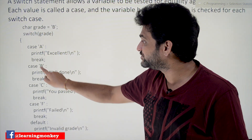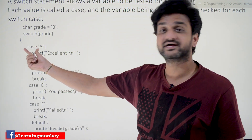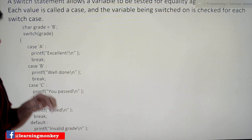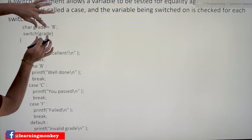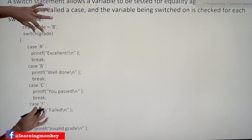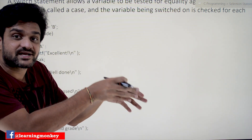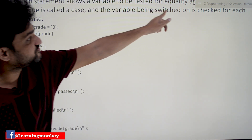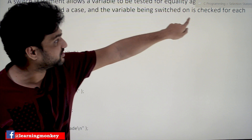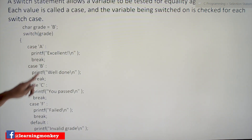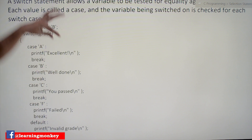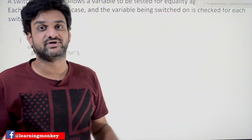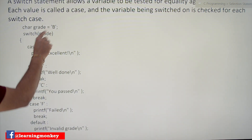Each value in the list is called a case, and 'case' is another keyword which describes the values in the list. The value of the variable is compared against all these case values. If any value is equal, that particular case will get executed. So the variable being switched on is checked against each switch case, and wherever the value is equal, that case executes.